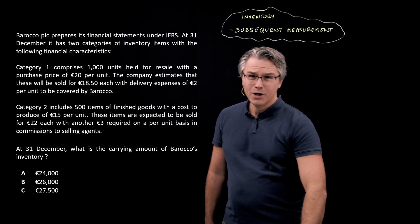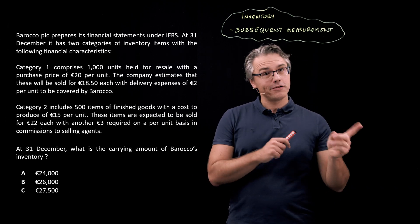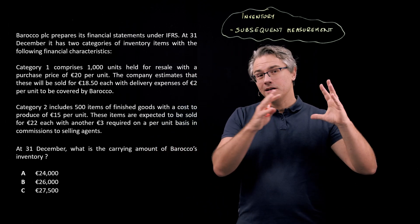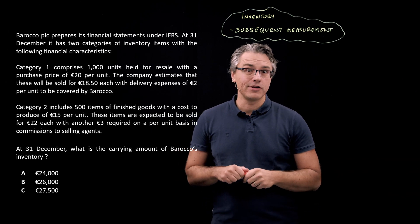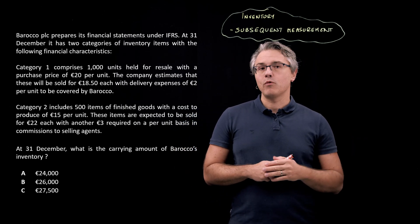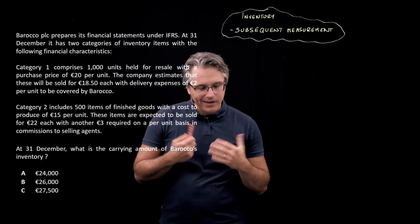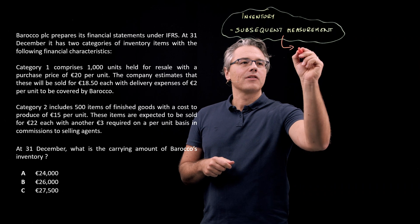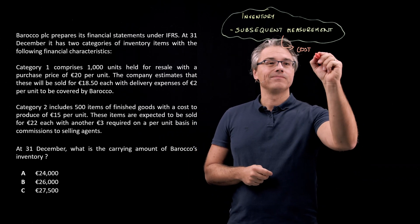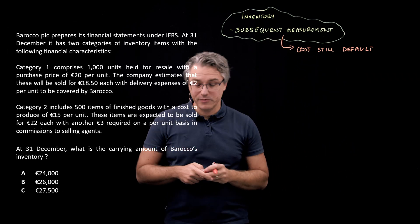When we discussed initial measurement in the previous video, we talked about the fact that when you initially introduce an item of inventory into your balance sheet, you measure it at cost. And that sort of continues to be the default state once that inventory item is already in your balance sheet at subsequent dates. So cost — whether the cost to buy or the cost to produce — is still the default. By default, we still measure those items at their cost.